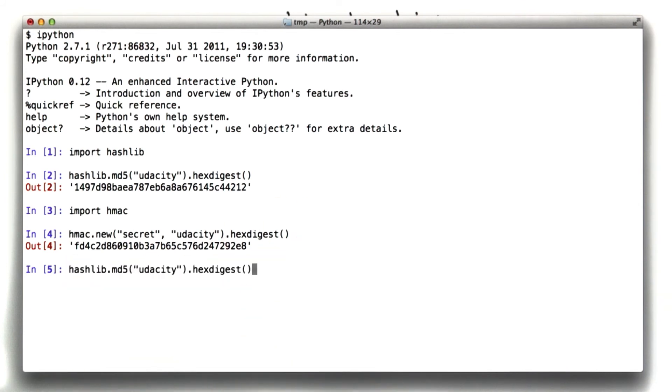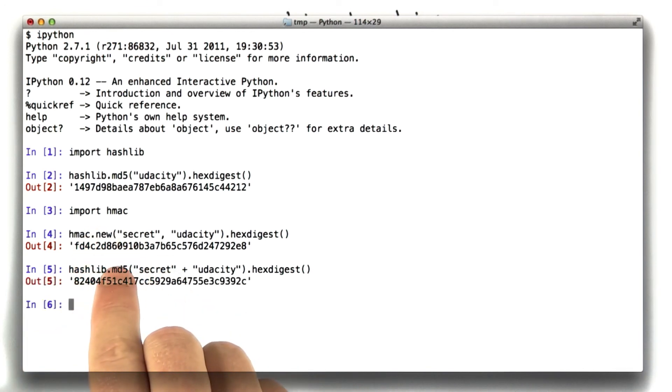Of course, we could have done something like this, secret plus Udacity, and as long as secret stays the same, when we verify, our algorithm will still work, but HMAC is just basically a more secure way of accomplishing secret plus Udacity.